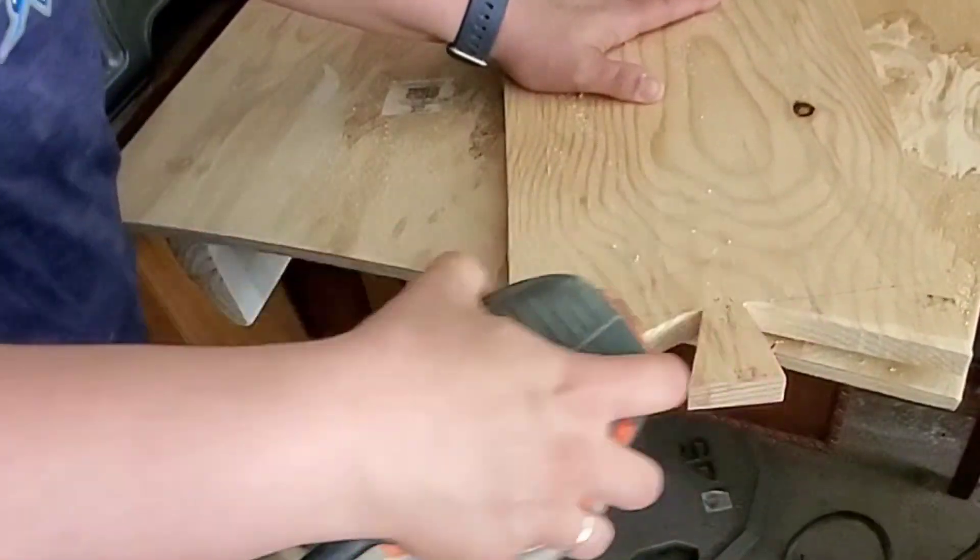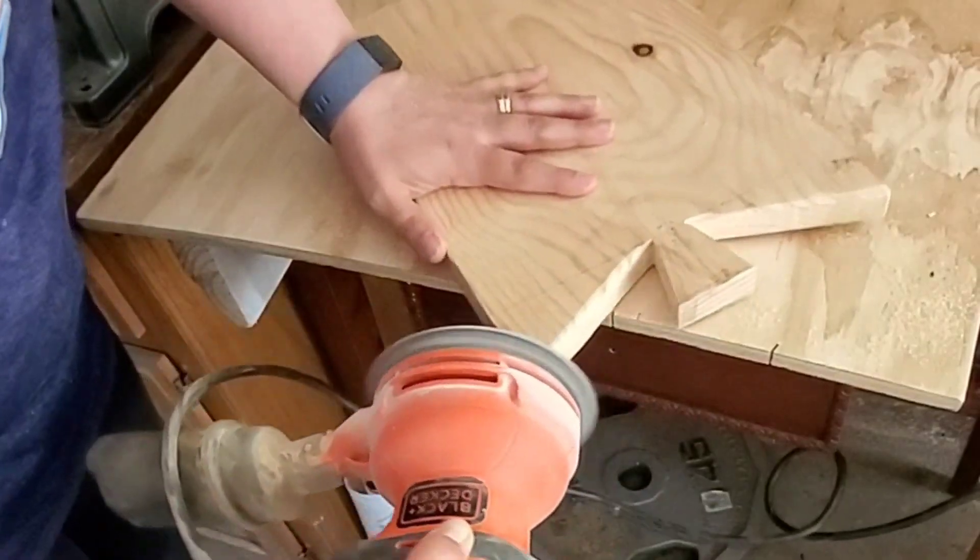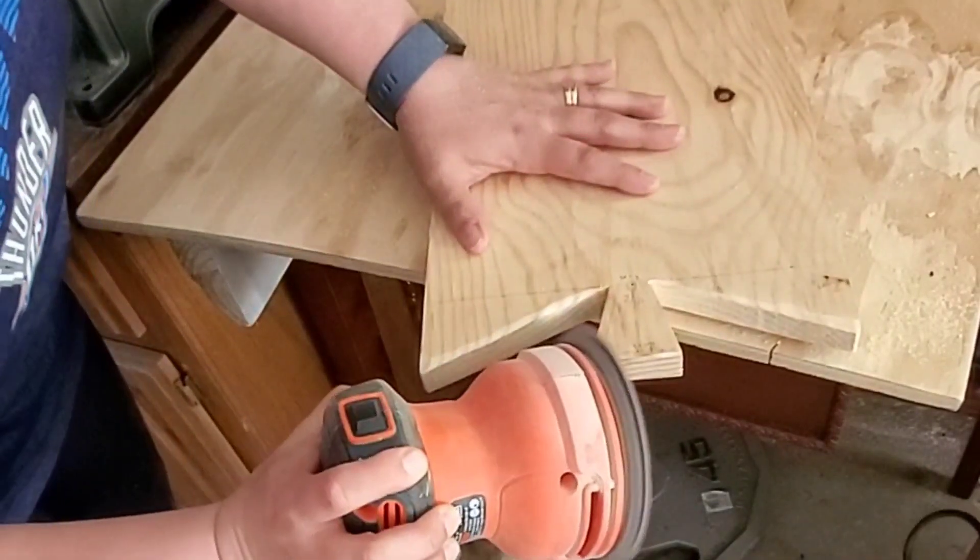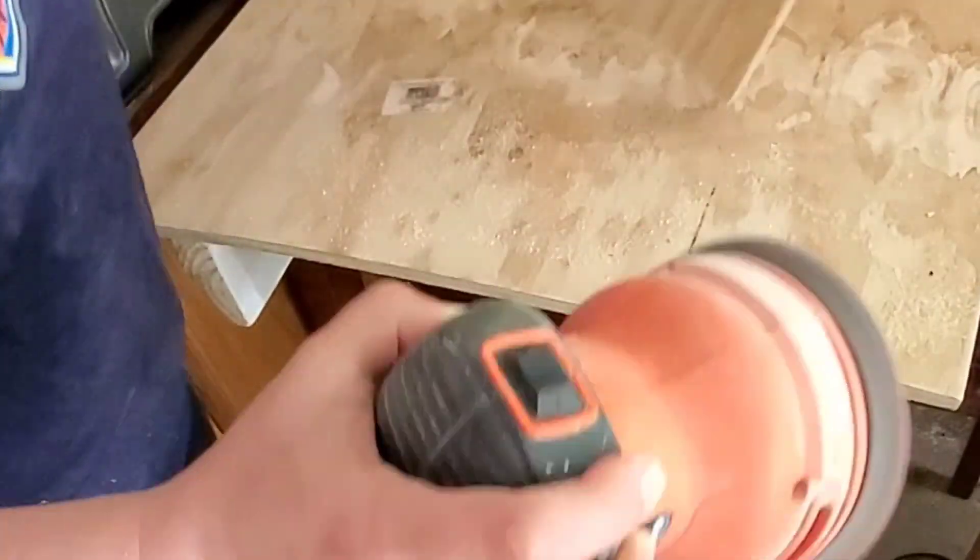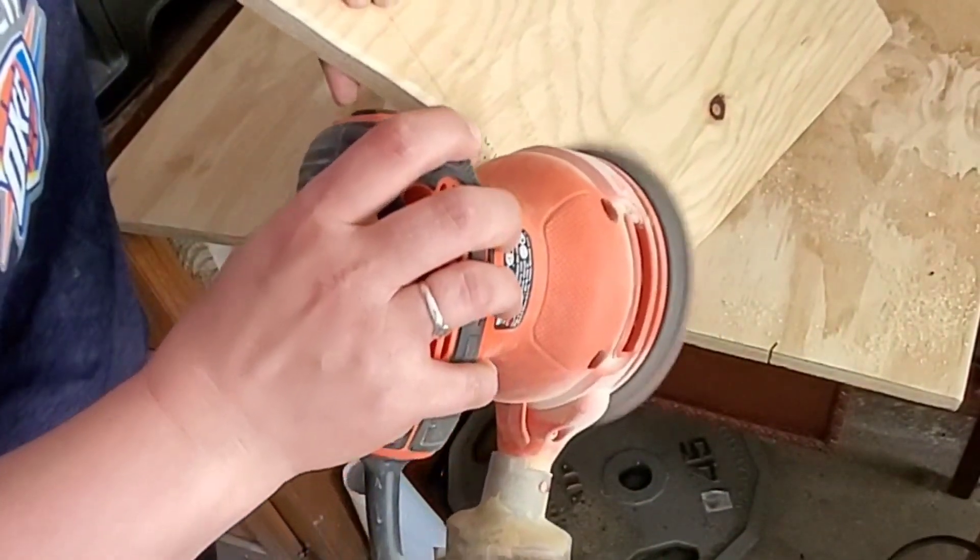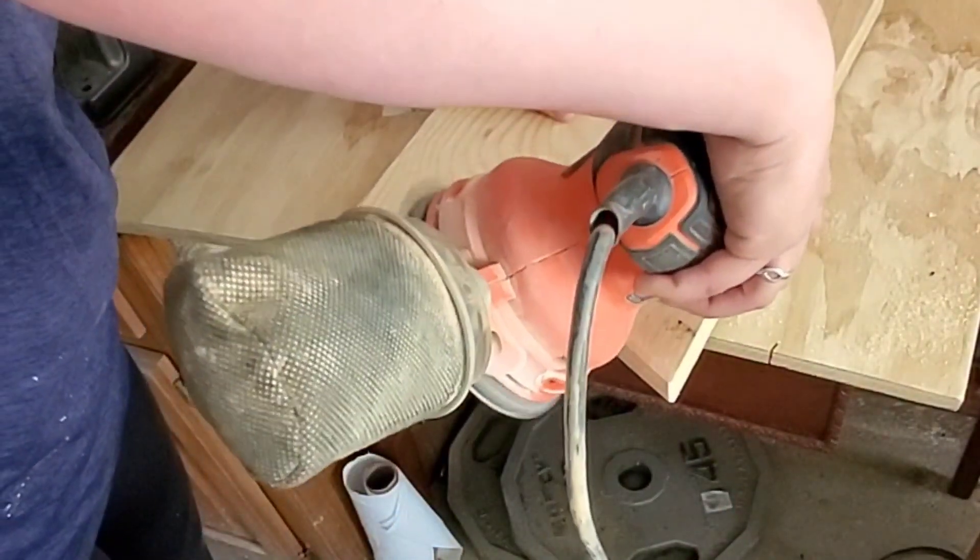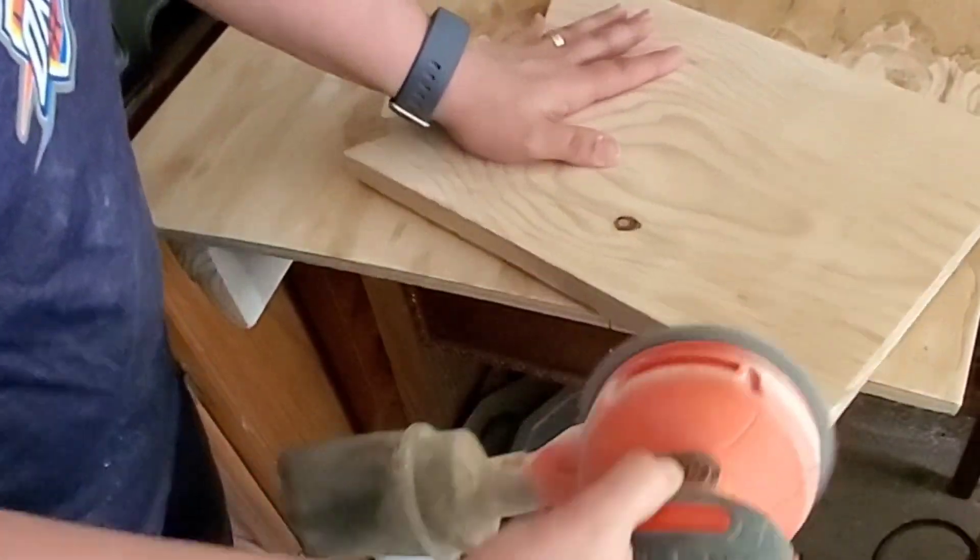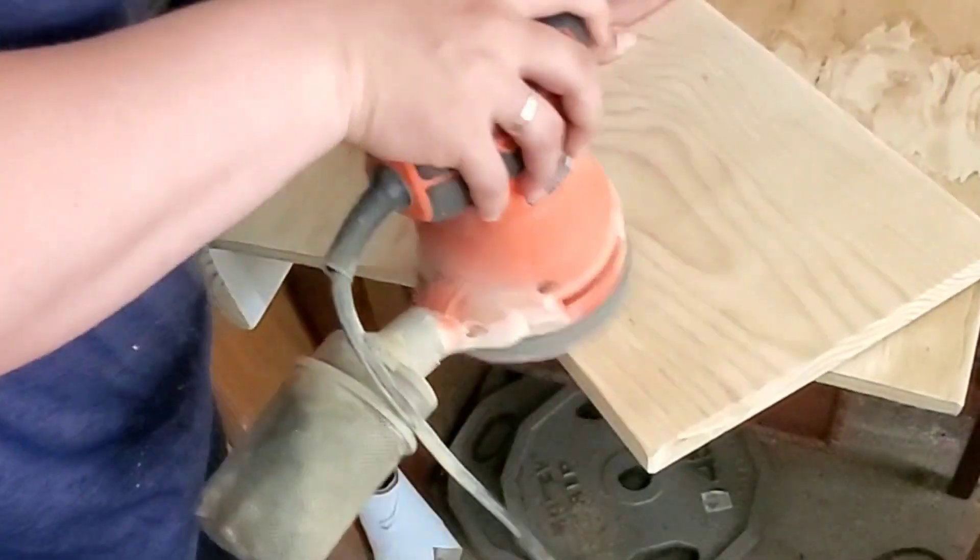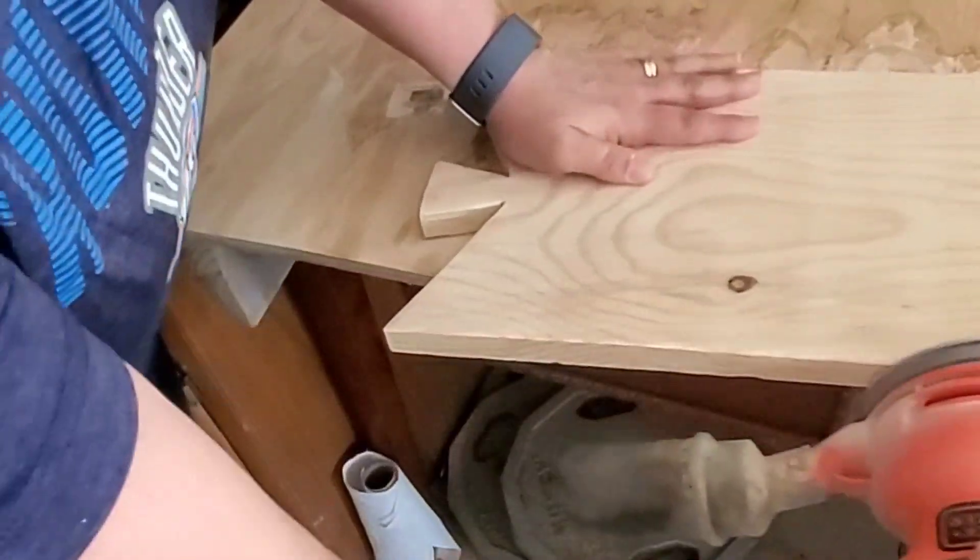Next, I'm taking my orbital hand sander. Again, I got this at Walmart—this is not a Walmart ad, but this is just where I purchase my tools inexpensively. I'm taking 220 grit and sanding down this cutting board. I make sure I get all my edges and I kind of round them out, and the sides and the surface of the board.